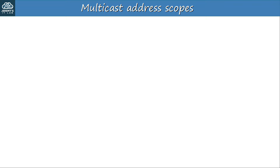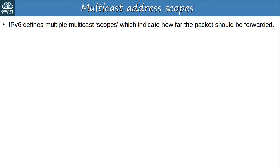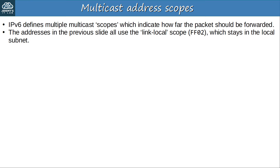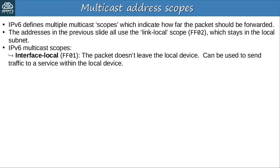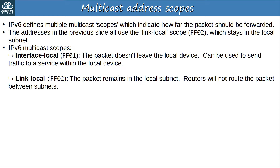IPv6 defines multiple multicast scopes which indicate how far a multicast packet should be forwarded. The addresses in the previous slide all use the link-local scope, which stays in the local subnet — note this is a different concept from an IPv6 link-local address beginning with fe80. Interface-local multicast addresses begin with FF01 — these messages don't actually leave the local device and can be used to send traffic to a service running within the local device. Link-local scope uses FF02 — these multicast addresses stay within the local subnet and are not routed between subnets.